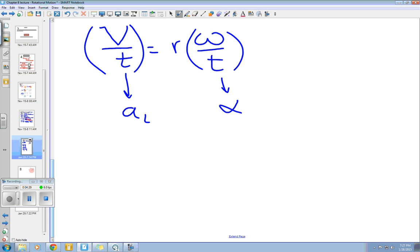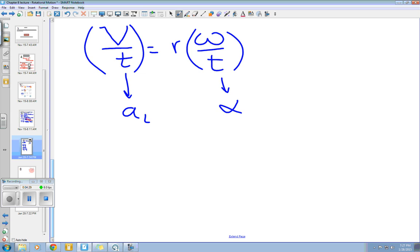Now we have to be careful here. This is tangential acceleration. So when we studied circular motion, you learned about radial acceleration and tangential acceleration. Let's write this equation, then we'll go back and look at the difference between those two. So we get tangential acceleration is equal to R times angular acceleration.